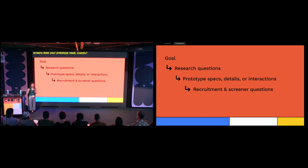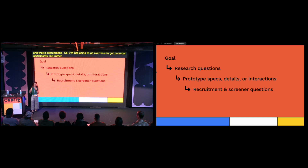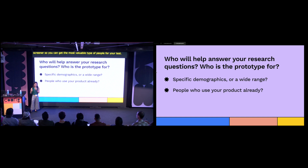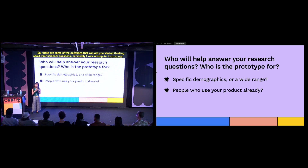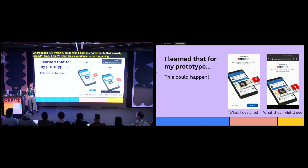This brings us to one of the stickier portions of planning a usability test: recruitment. I'm not going to go over exactly how to get potential participants, but rather what kinds of questions you can include in your screener to get the most valuable people for your test. Going back to the research questions — who will help you answer them? Is your prototype for a specific group or a more general broad prototype that anyone can interact with? Personally, I was looking for Android users because the NPR One app looks a little different on Android versus iOS, so in case I had participants who already use NPR One, I didn't want the experience to be too jarring.